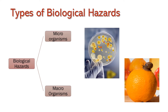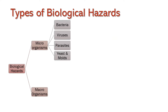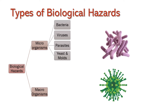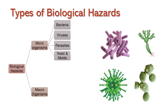Biological hazards are broadly classified into three categories: microorganisms, macro-organisms, and prions. Microorganisms include bacteria, viruses, yeast and molds, and parasites. Viruses like norovirus and hepatitis A virus can cause long-lasting liver diseases and spread typically through raw or uncooked seafoods. Yeast and molds cause spoilage in food and food products but do not cause any foodborne illnesses.